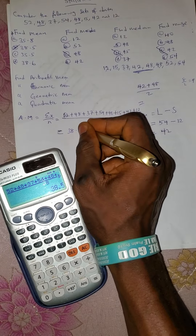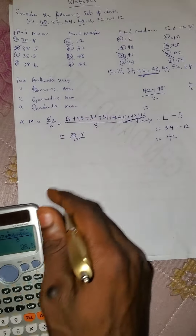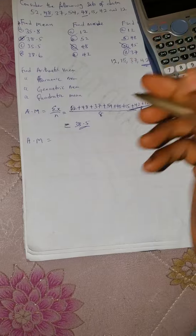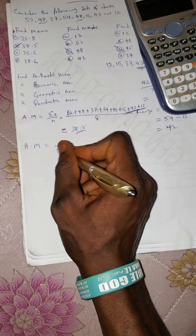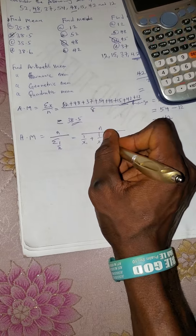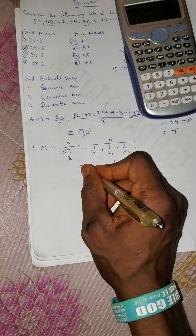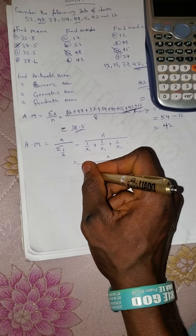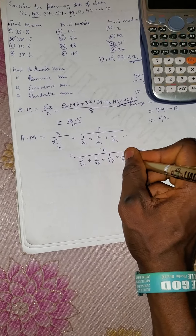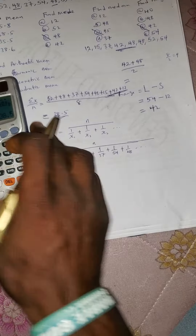The answer is 38.5 — the same as before. The next question is to find the harmonic mean. The harmonic mean is the inverse of the arithmetic mean, which means n over the summation of 1/x. So we have n over (1/x₁ + 1/x₂ + 1/x₃ ...). With our values: 8 over (1/52 + 1/48 + 1/37 + 1/54 + ...).